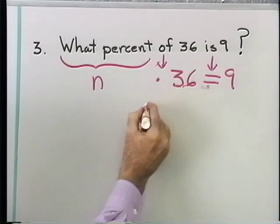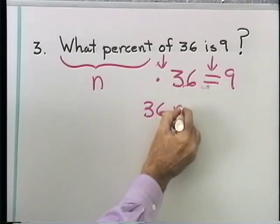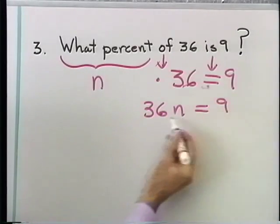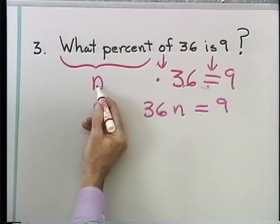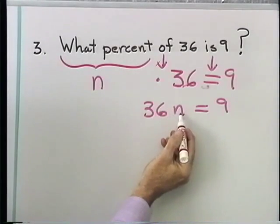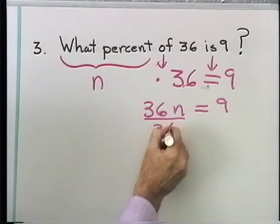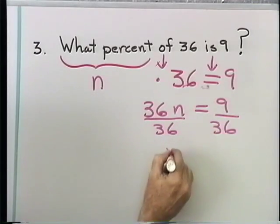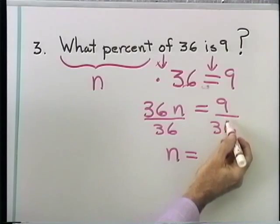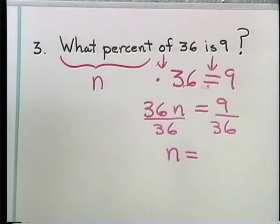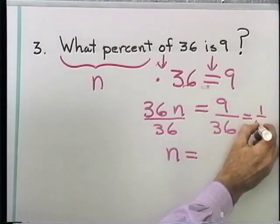I have n times 36, let's write that as 36n is equal to 9. Here's an equation to solve, because I know n times 36 is the same as 36 times n. Divide both sides by 36. I end up with n is equal to 9 divided by 36. That's the same as 1 fourth.